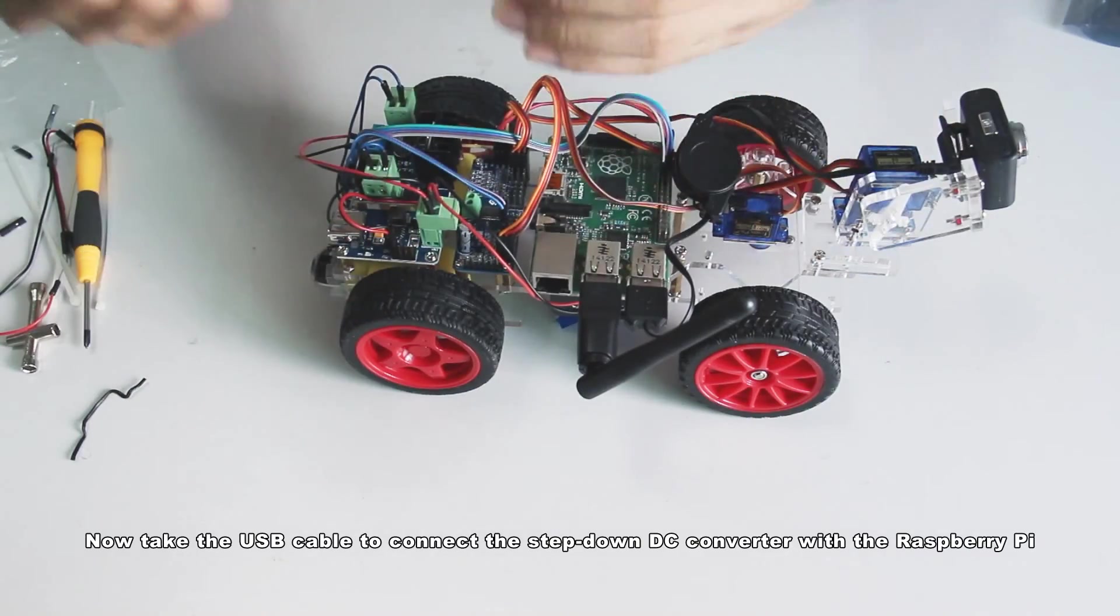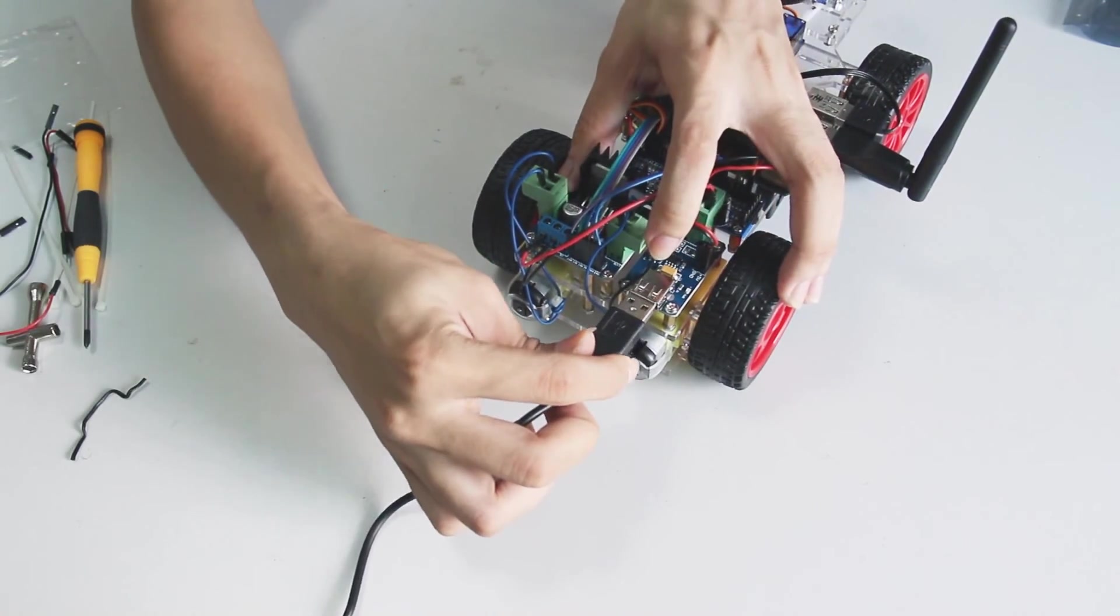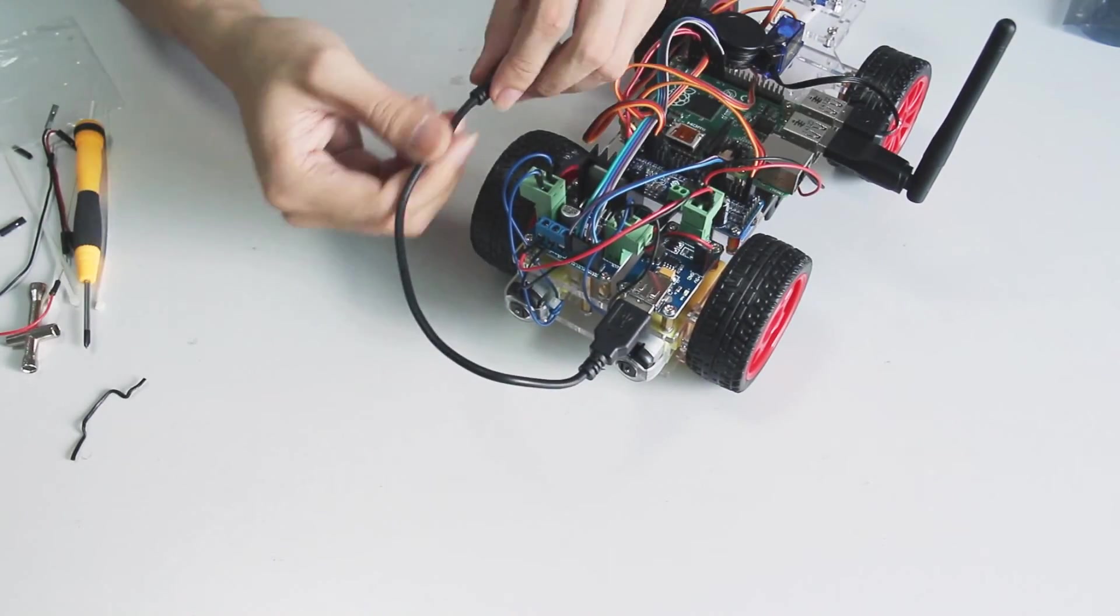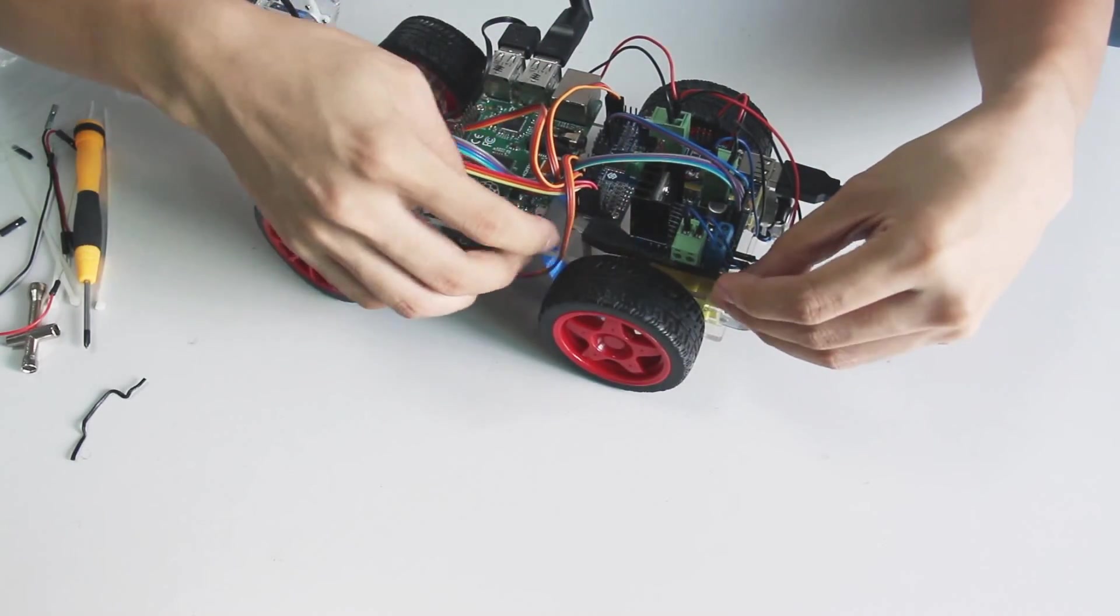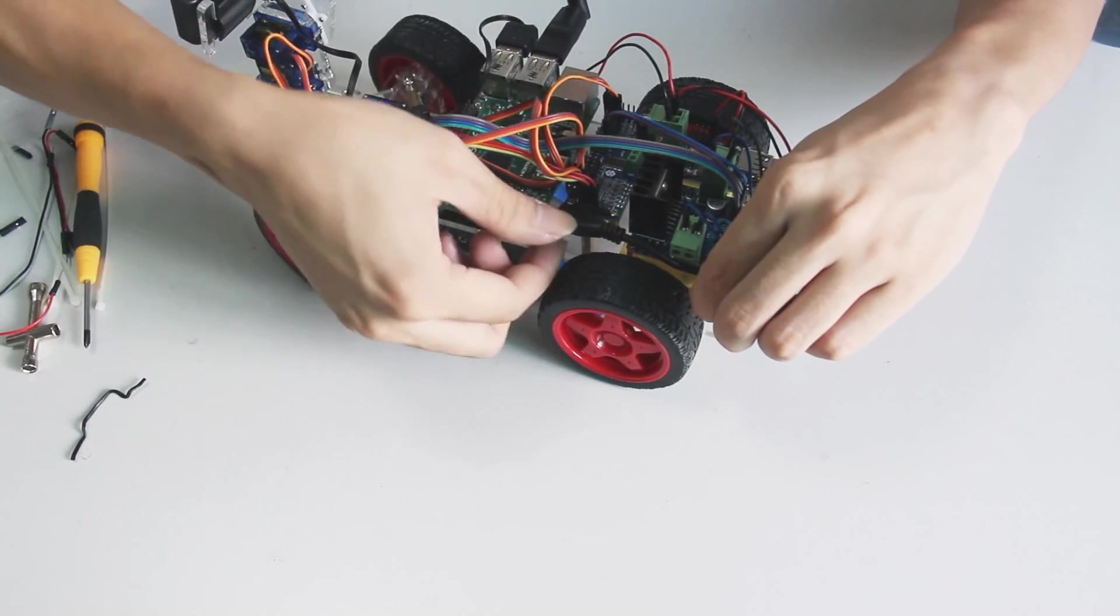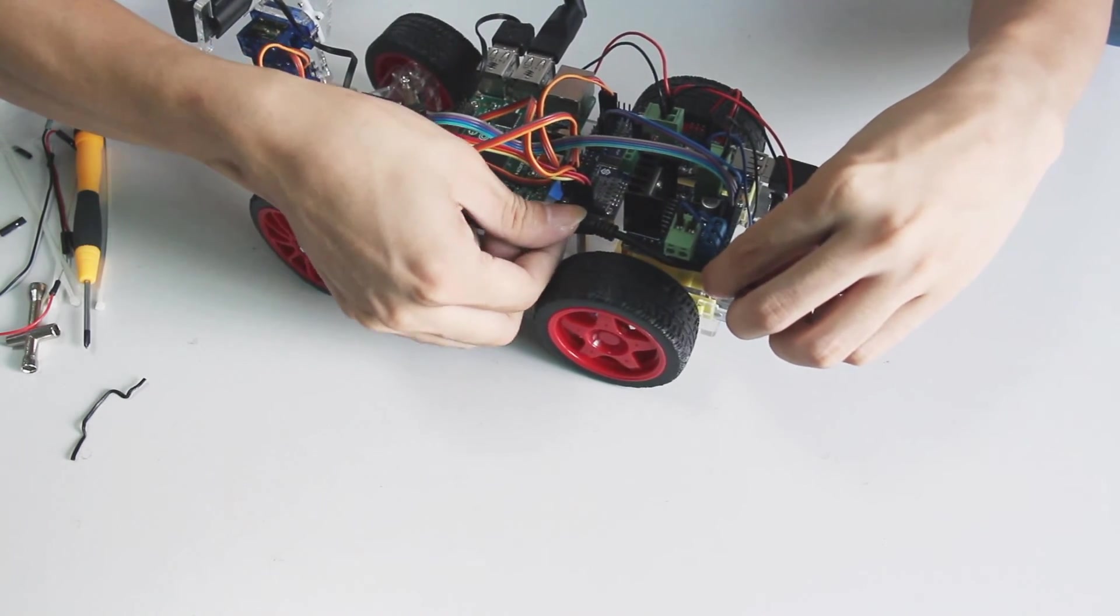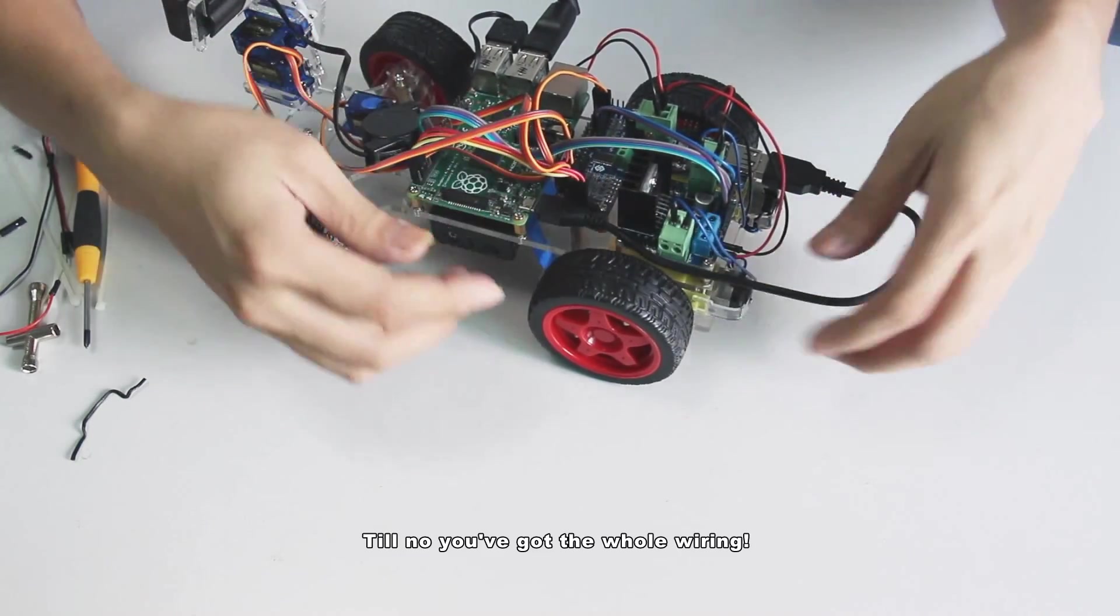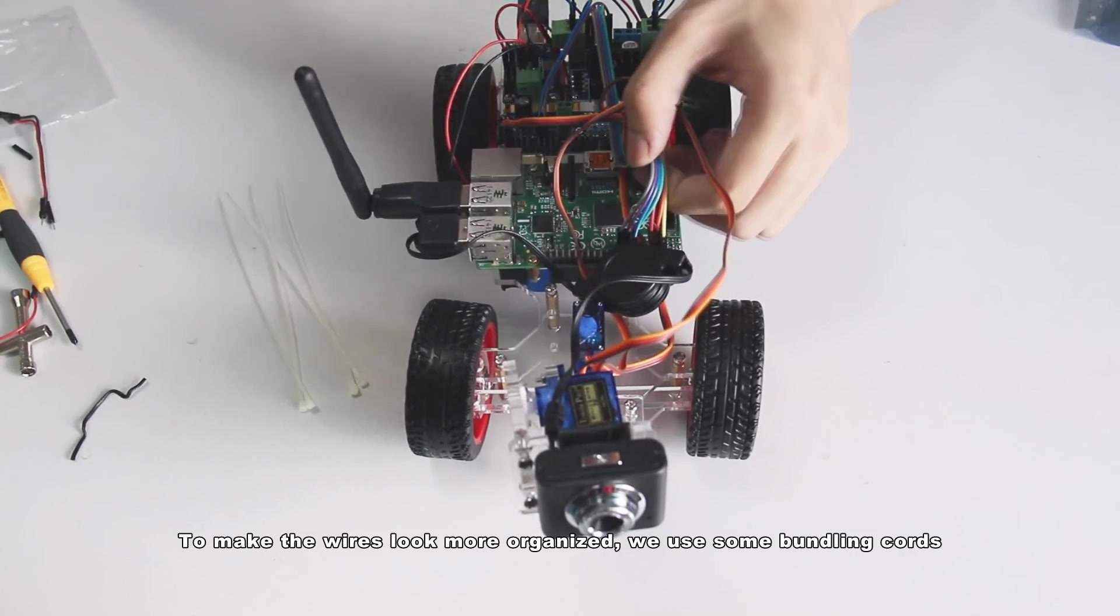Now take the USB cable to connect the step down DC converter with the Raspberry Pi. So now you've got the whole wiring. To make the wires look more organized we use some bundling cords.